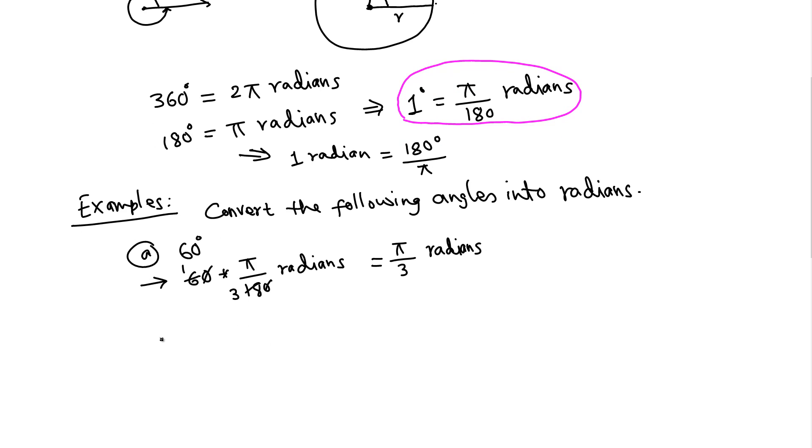In the same way, if we have 45 degrees and we want to convert into radians, this is 45 multiplied by π over 180, and we get radians. Now 45 over 1, 45 is on the top.